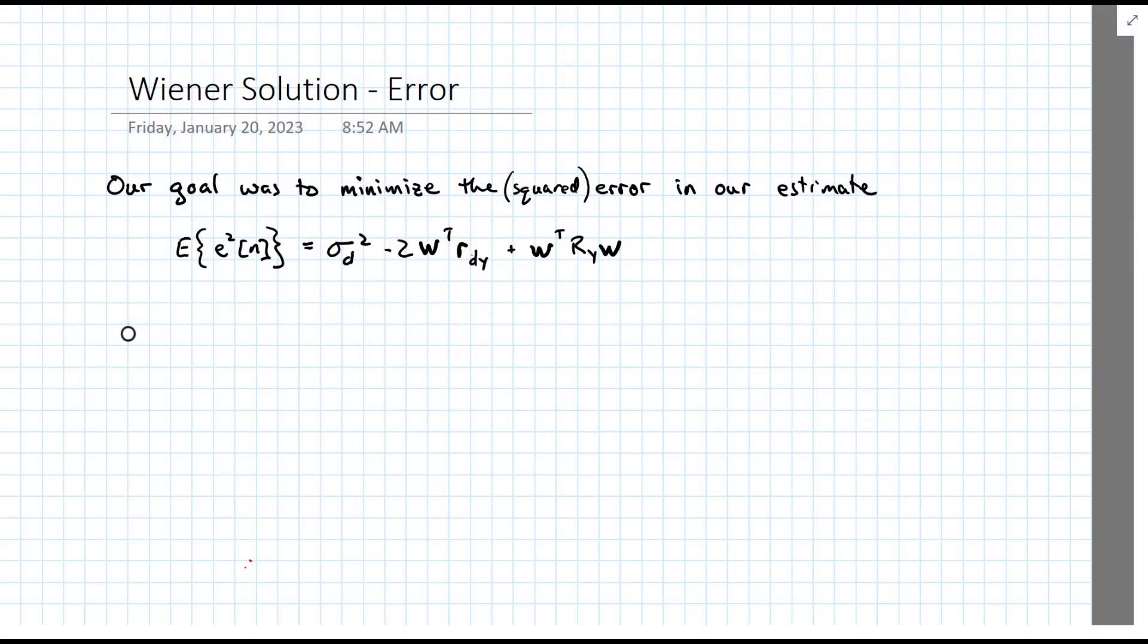So we ended up with an expression that looked something like this. Our expected squared error had the variance of the quantity that we're trying to predict, d.